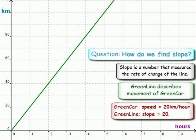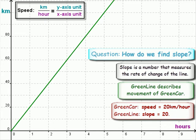Let's look at that ratio for a minute, kilometers per hour. So speed is measured in distance over time. But even more important, distance is the y unit, and time is the x unit.